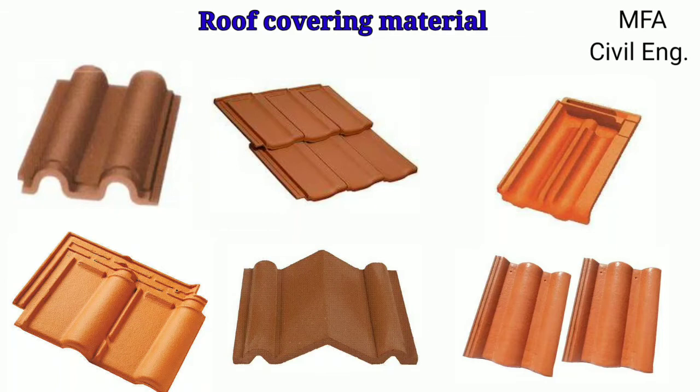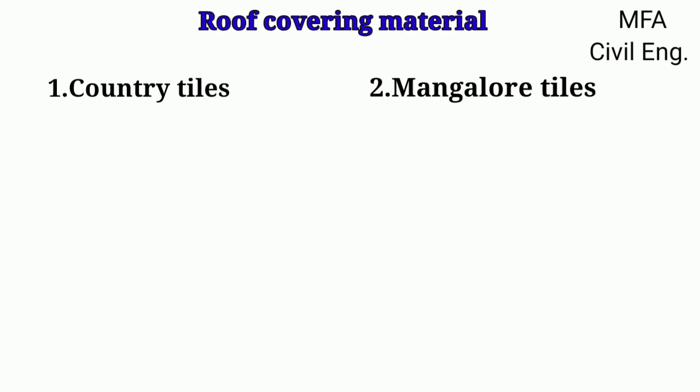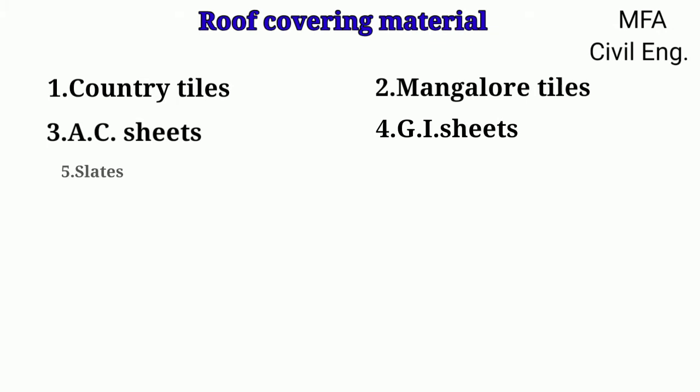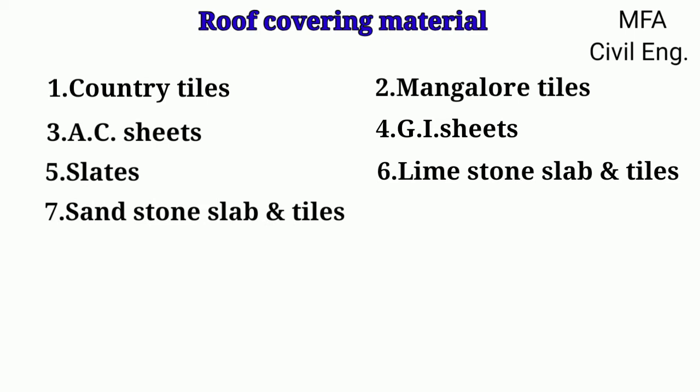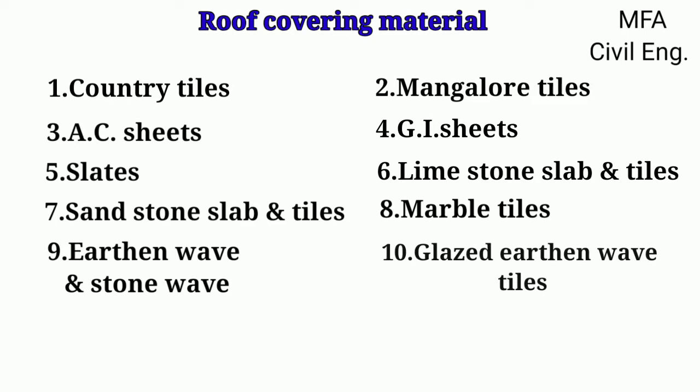These are the various types of roofing materials available for use under various conditions: country tiles, mangler tiles, asbestos cement sheet, galvanized iron sheet, slates, limestone slab and tiles, sandstone slab and tiles, marble tiles, earthen ware and stone ware, glazed earthen ware tiles and fibre sheets.